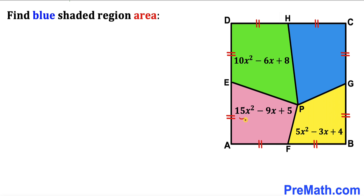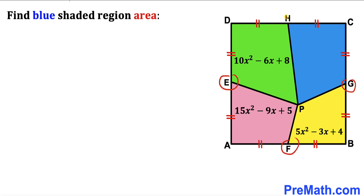The area of the pink quadrilateral is 15x² minus 9x plus 5, and the area of the green quadrilateral is 10x² minus 6x plus 8. Moreover, points E, F, G, and H are the midpoints of the side lengths, and our task is to calculate the area of the blue shaded region.